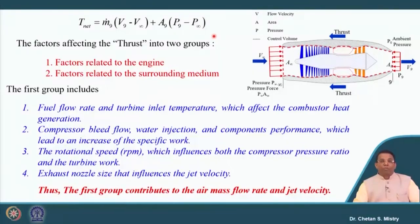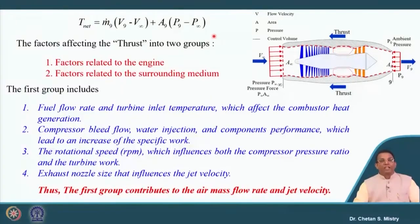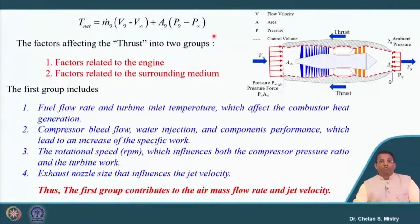Then we discussed that this thrust component is affected by two major factors: one related to the engine and one related to the surrounding medium. When discussing components related to the engine, they are mainly associated with the turbine entry temperature and the amount of heat generated. Next, if we configure in terms of compressor bleed flow, water injection, and different component performance, that will lead to a change in the specific work of the engine. We also discussed rotational speed, which influences pressure ratio and turbine work, and exhaust nozzle size, which influences jet velocity. Overall, engine components have major influence on mass flow rate as well as jet velocity.